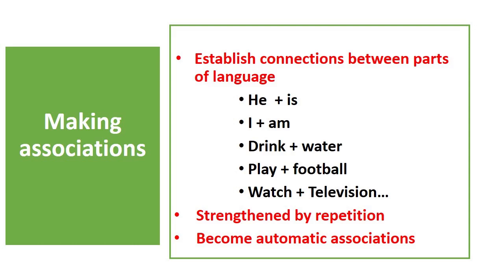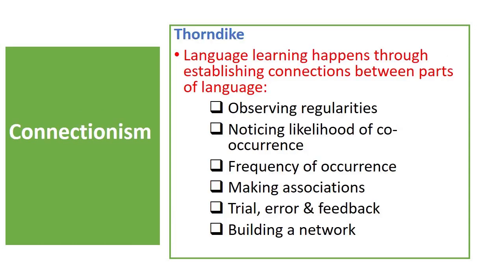Thus, whenever the learner is thinking about 'he', it is automatically related to 'is', so the learner produces 'he is', which becomes an automatic connection or association. These connections or associations develop through many stages. First, learners observe regularities in language input and notice language parts that are more likely to go together, such as collocations. Then, the frequency of appearance or repetition makes these associations stronger. The more an association is repeated, the stronger the connection becomes.